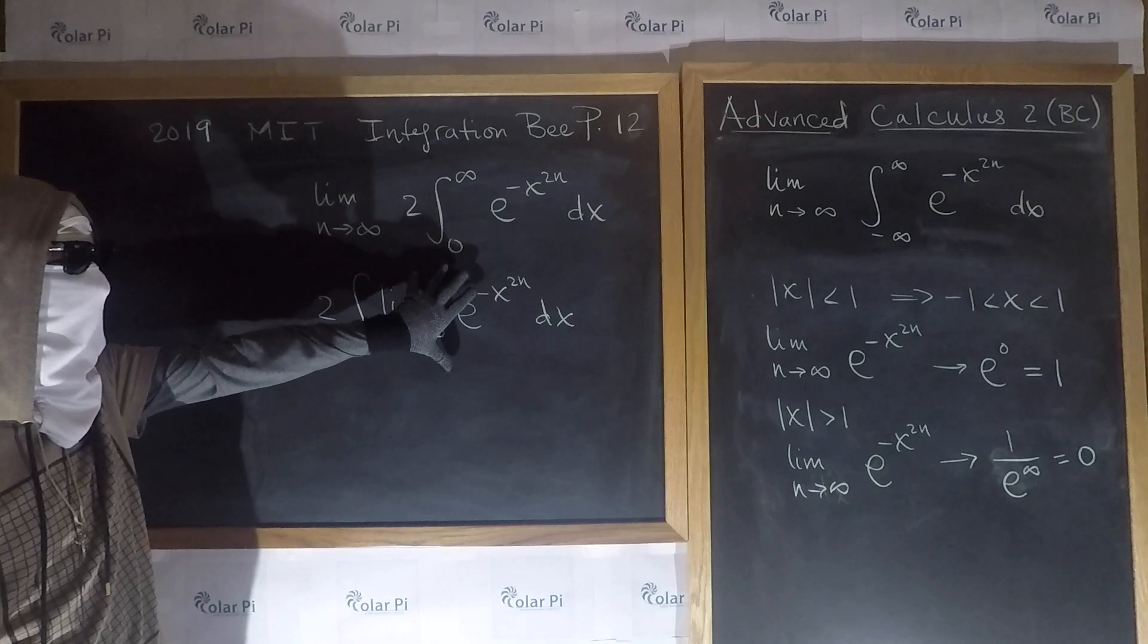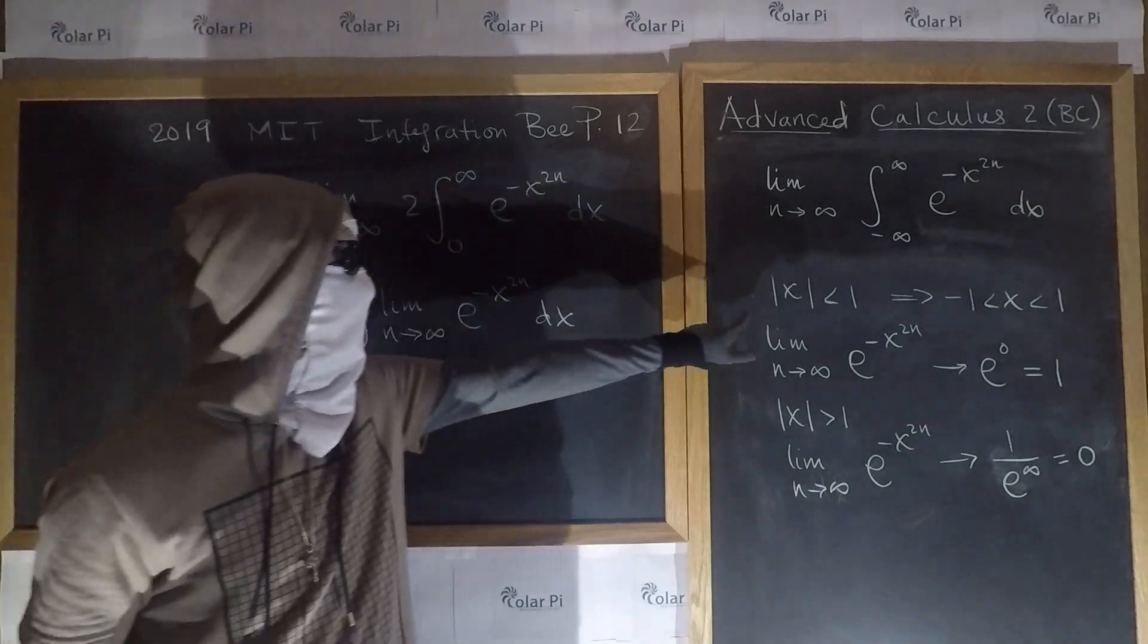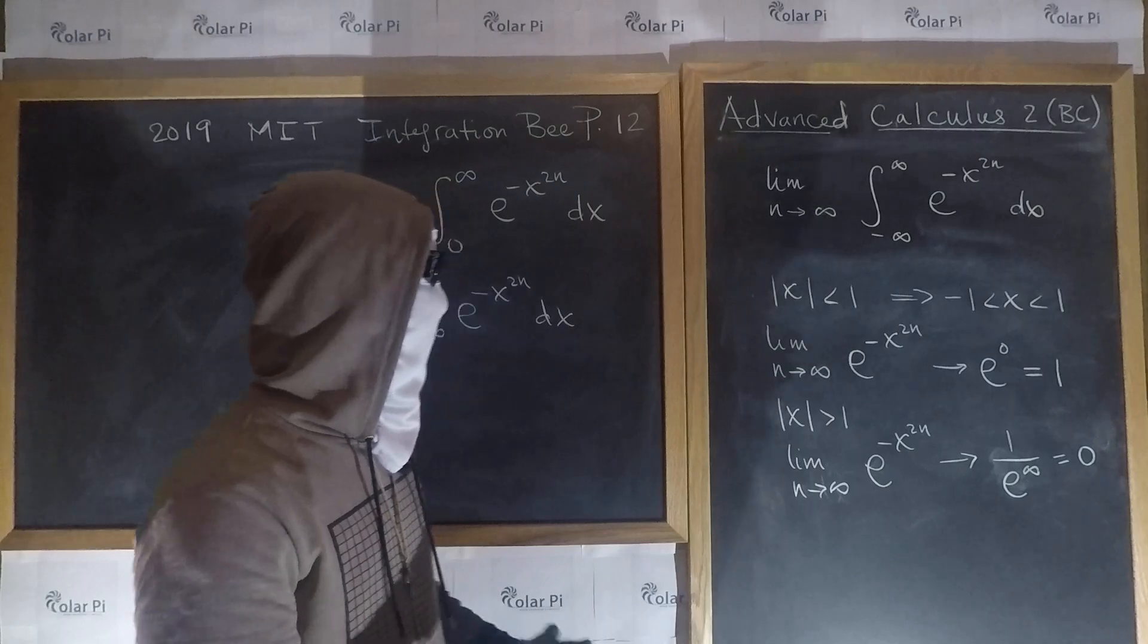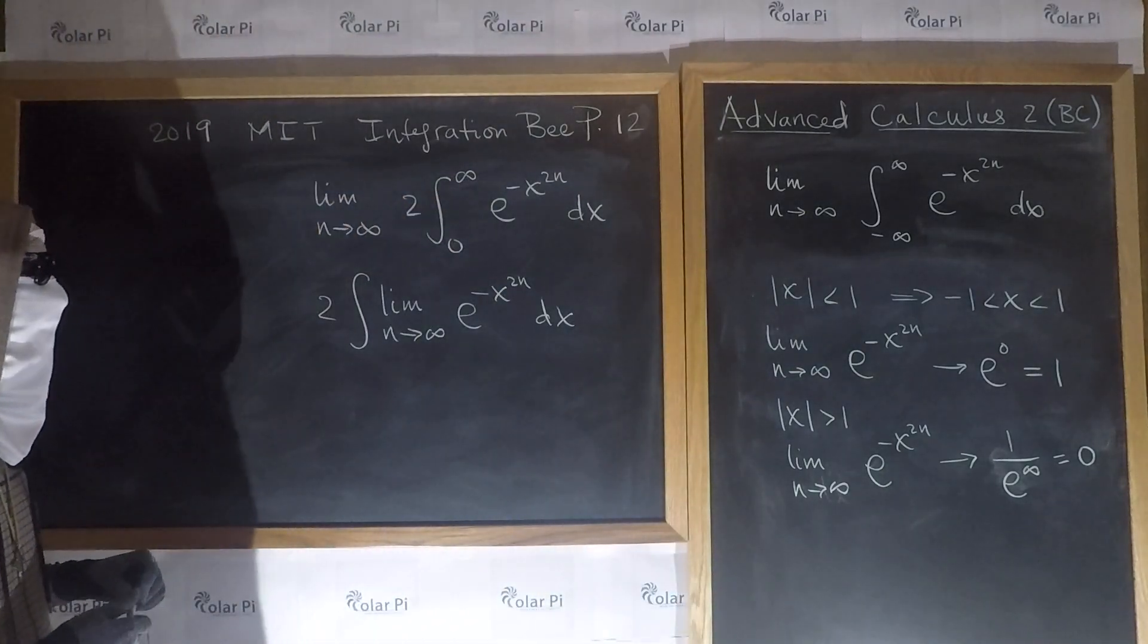So this limit here is 1 for x's between negative 1 and 1, and it's 0 for x's outside of that interval.